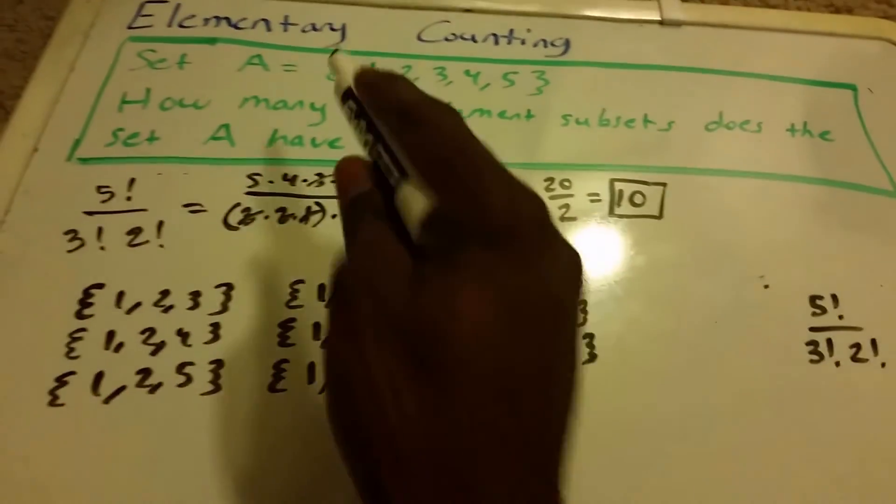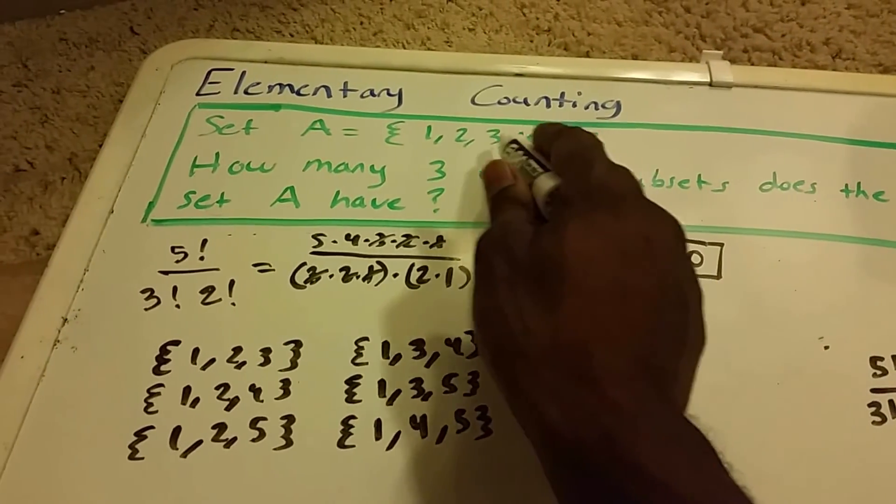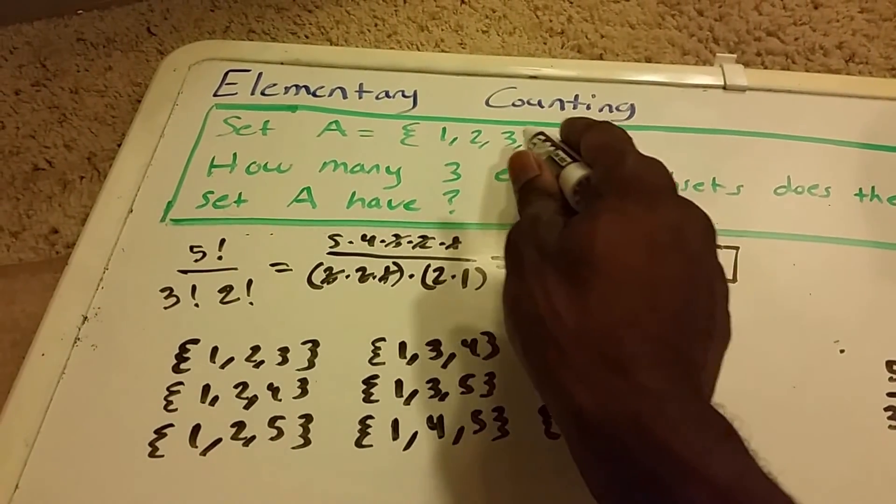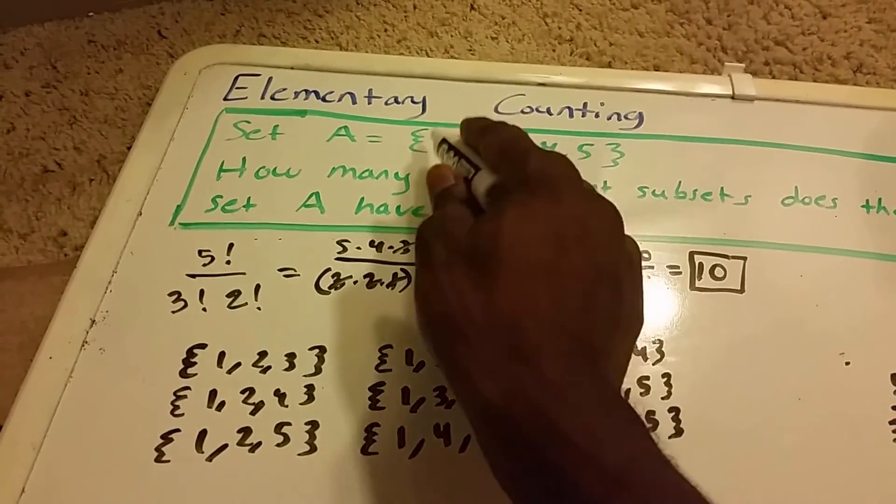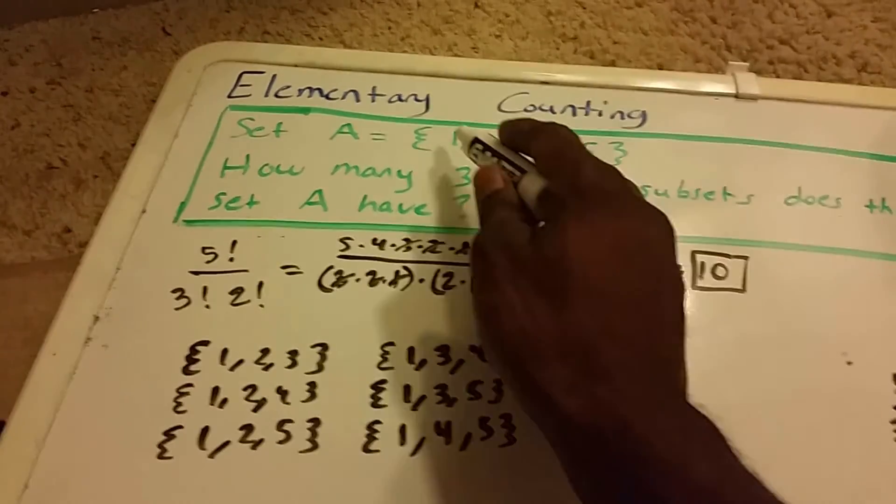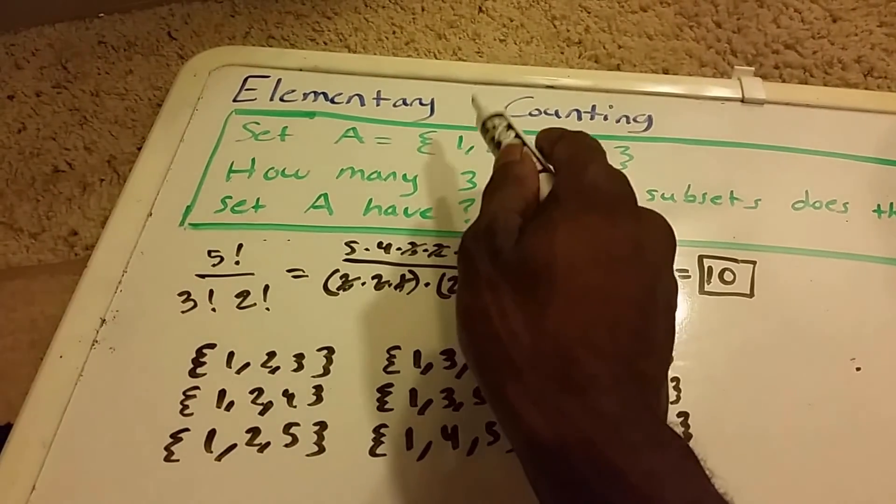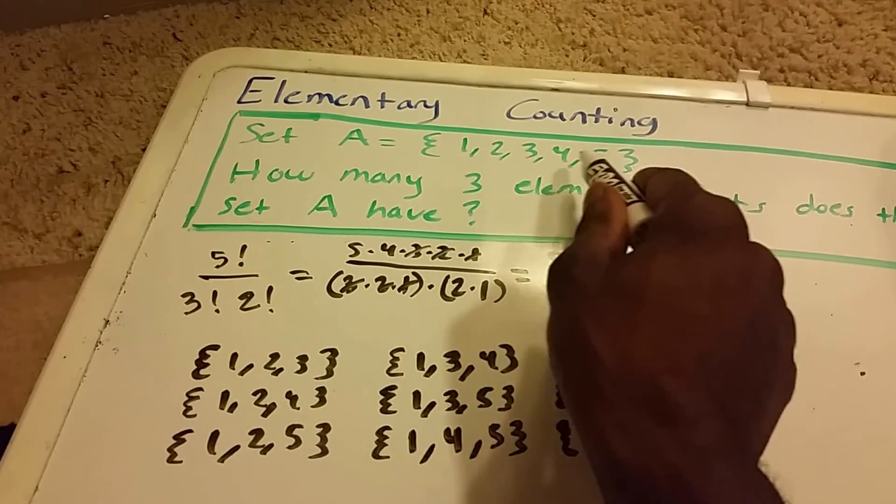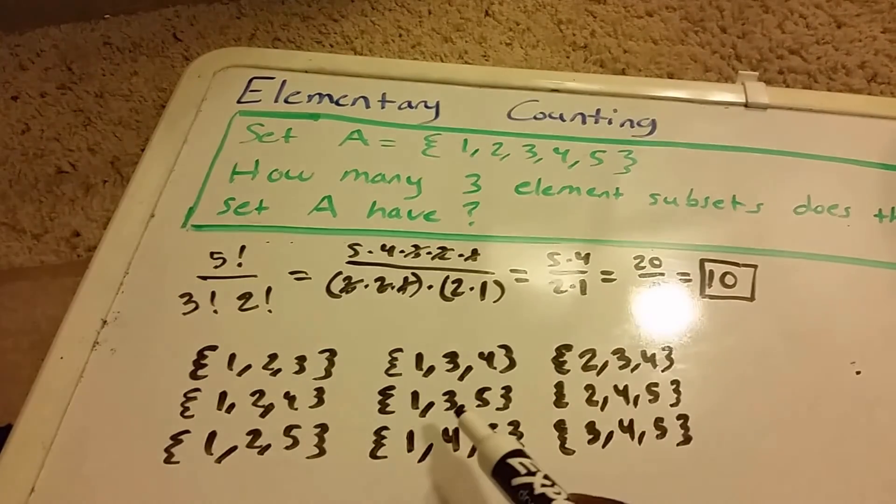We have 1. Let's check this. We have 1, 2, 3, 1, 2, 4, 1, 2, 5. We have 1, 3, 4, 1, 3, 5. And that's all of our 1s.